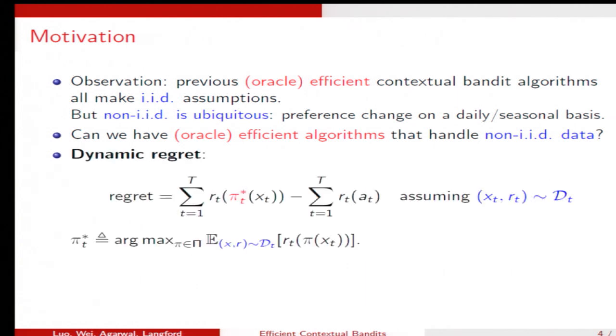To achieve this goal, we slightly adjust the assumptions. We assume that the context reward pair are drawn from the time varying distribution, dt.